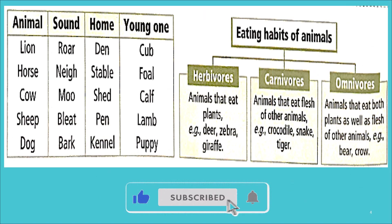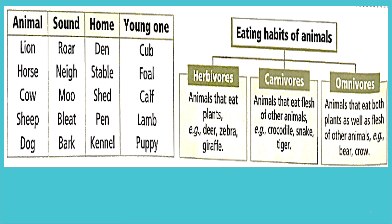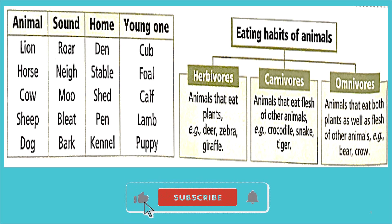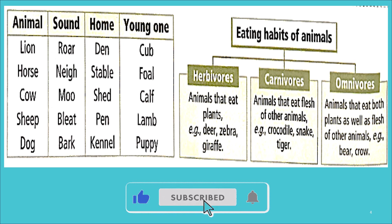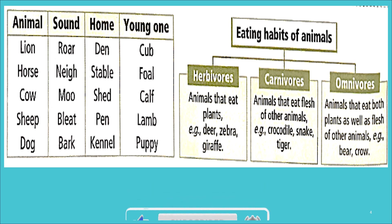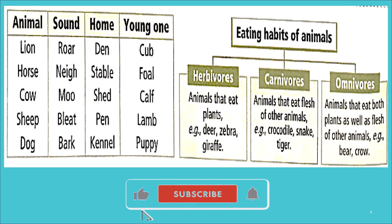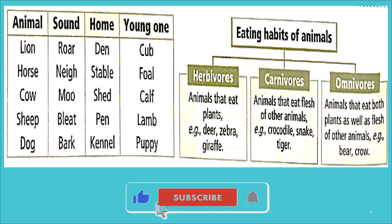Let's see the eating habits of animals and their categories. Herbivores are those animals that eat plants — for example, deer, zebra, giraffe. Carnivores are those animals that eat the flesh of other animals — for example, crocodile, snake, tiger, etc.